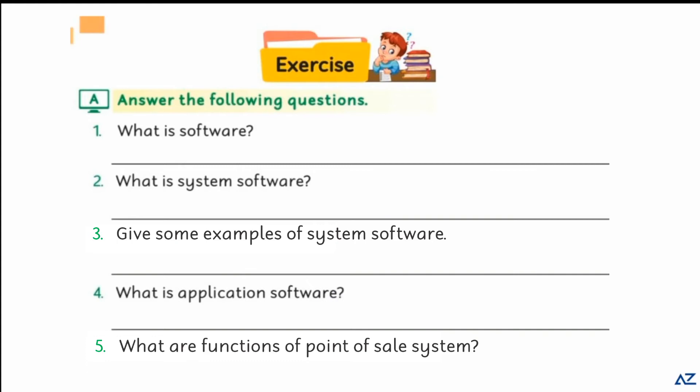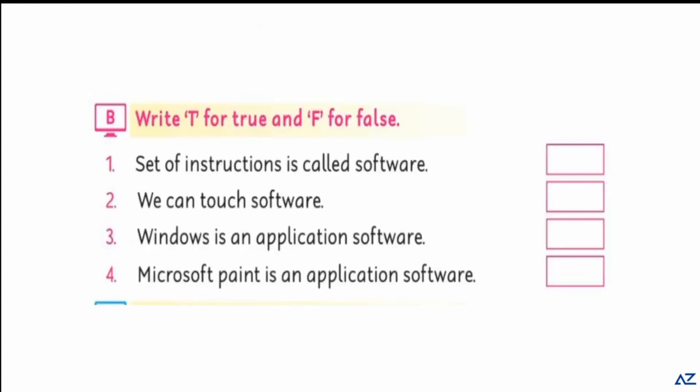Write T for true and F for false. Set of instructions is called software - true, write T here. Number two, we can touch software - no, you will write false, F here.